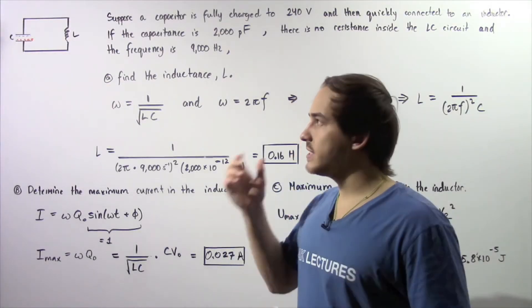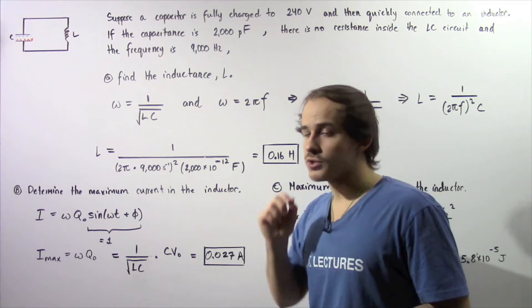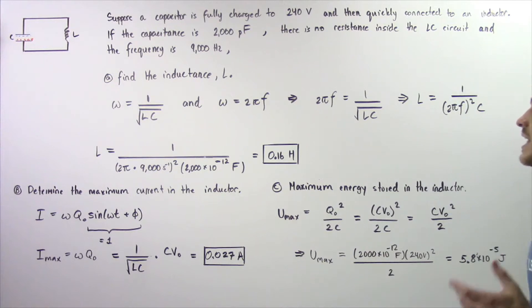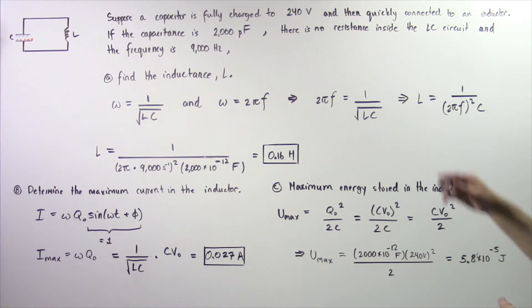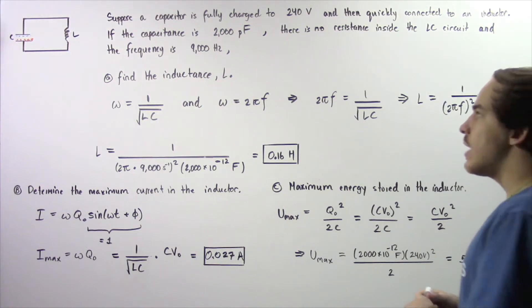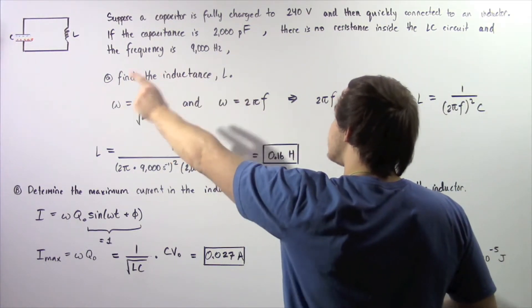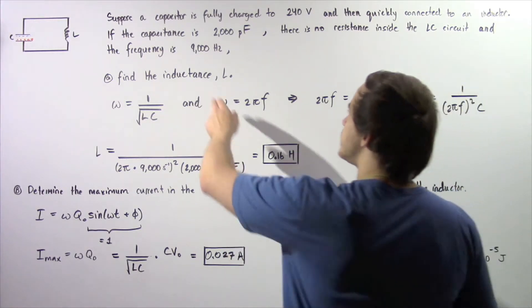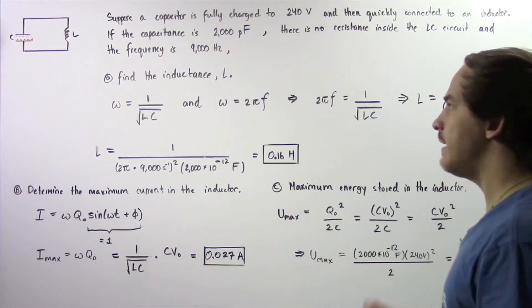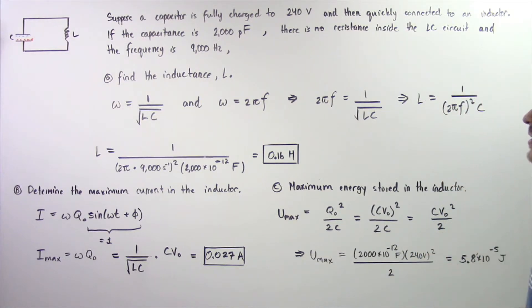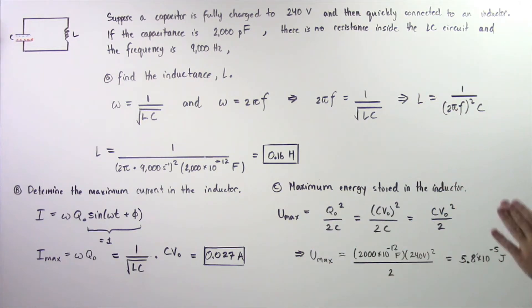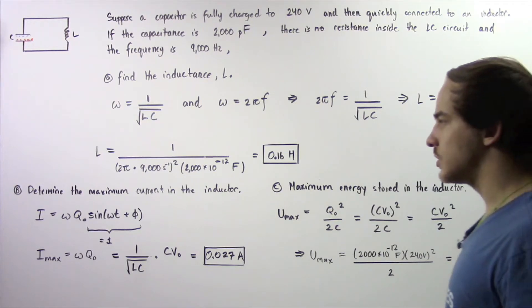Let's examine the following example that deals with an LC electric circuit. Suppose a capacitor is fully charged to a voltage of 240 volts and then quickly connected into an electric circuit that contains an inductor. The capacitance is 2000 picofarads, there is no resistance inside the LC circuit, and the frequency is 9000 Hz. In part A, find the inductance L; in part B, find the maximum electric current in the inductor; and in part C, find the maximum energy stored inside the inductor.